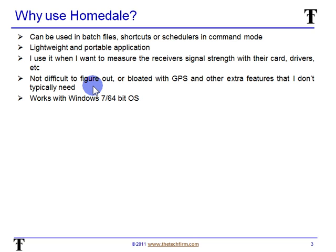It's not difficult to figure out. It's a very simple application — not bloated, no GPS settings or extra nonsense. Just a really simple, quick and dirty program. I also like the fact that it works with Windows 7 64-bit OS. One of the reasons I can't use NetStumbler anymore is because I've got Windows 7 64-bit OS. So, all good reasons to use Homedale.